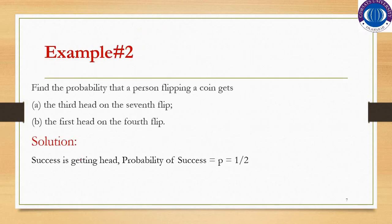Example 2: Find the probability that a person flipping a coin gets the third head on the seventh flip (Part A), and the first head on the fourth flip (Part B). The person is flipping a coin and is interested in getting a head. Success is defined as getting a head, so the probability of success P equals 1/2.